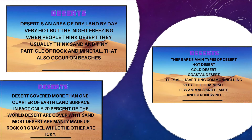Desert is an area of dry land. By day it is very hot, but at night it is freezing. When people think desert, they usually think sand — tiny particles of rock and minerals that also occur on beaches. Deserts cover more than one quarter of the Earth's land surface. In fact, only 20% of the world's deserts are covered with sand. Most deserts are mainly made up of rock or gravel.